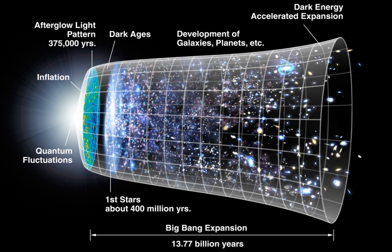The presence of either type of horizon depends on the details of the FLRW model that describes our universe. Our understanding of the universe back to very early times suggests that there is a past horizon, though in practice our view is also limited by the opacity of the universe at early times. So our view cannot extend further backward in time, though the horizon recedes in space. If the expansion of the universe continues to accelerate, there is a future horizon as well.